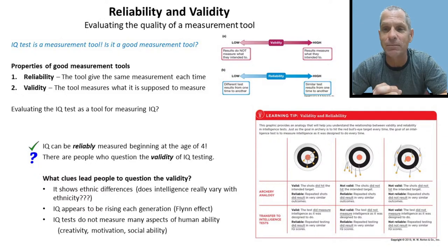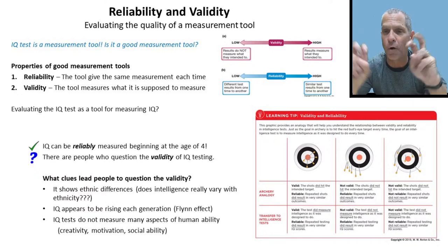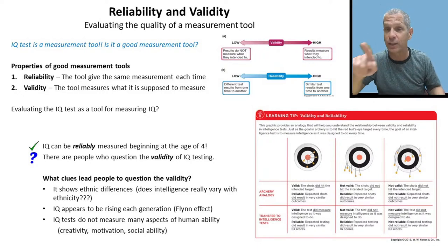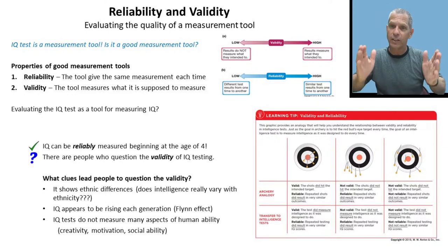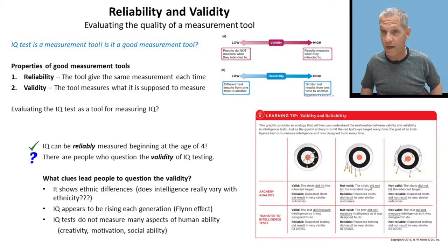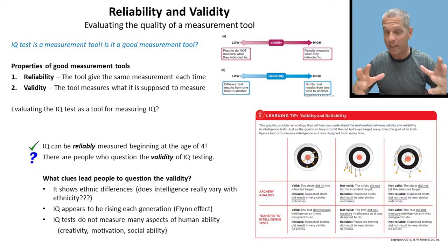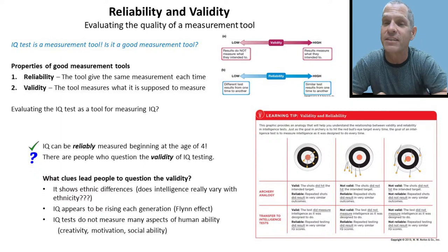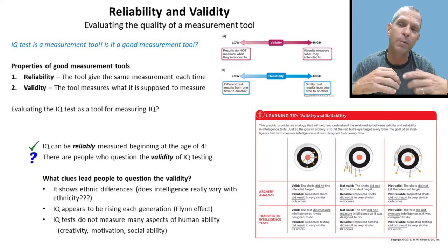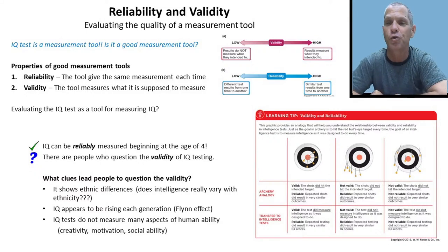The weird thing about IQ is it seems to be rising every generation — this is called the Flynn effect. What they have to do every 10 years or so is re-norm a test to find out what average is. Every generation, you have to answer more questions correctly to be deemed average. What would be above average in 1930 would be below average in 2000. Are human beings getting more intelligent? Or are we just measuring the improvement in school-related activities as schooling gets better?